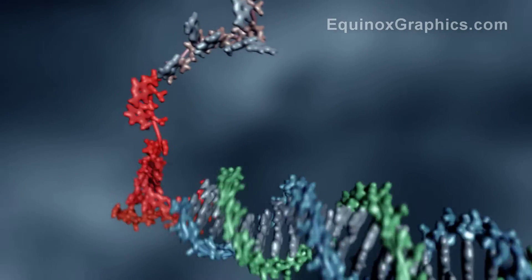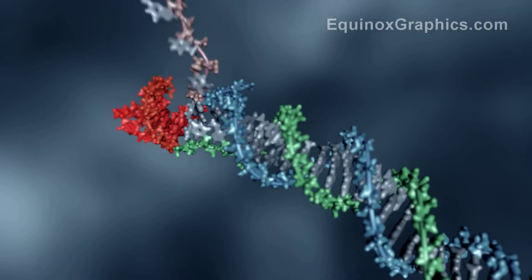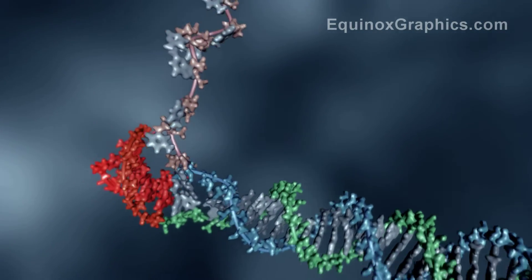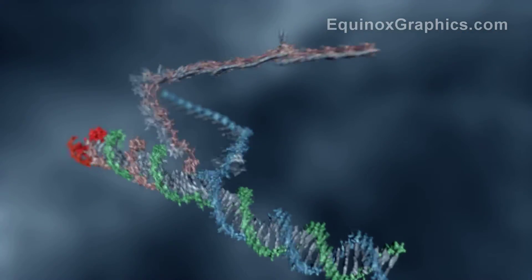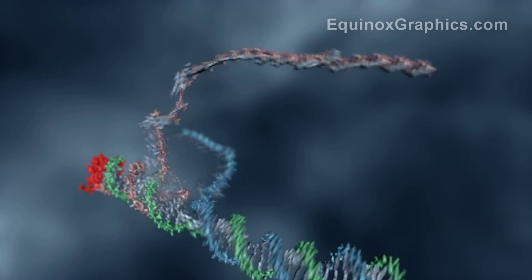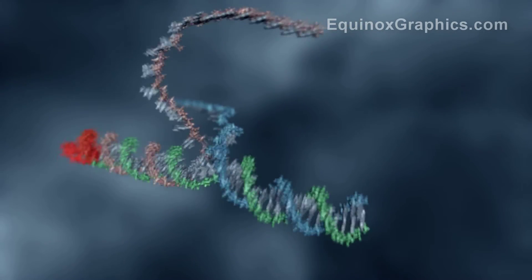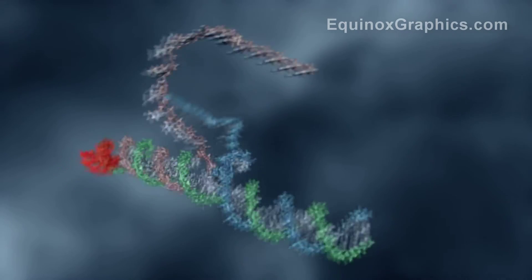For example, an elementary strand displacement reaction is shown in which an input strand displaces an output strand. The input strand has the correct complementary nucleic acid sequence to bind to the toehold and once bound it can displace the output strand base by base.